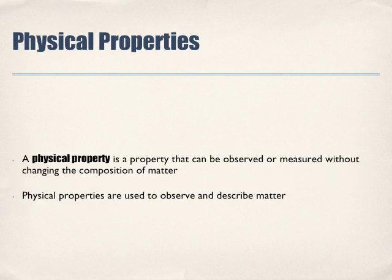A physical property is a property that can be observed or measured without changing the composition of matter. Physical properties are used to observe and to describe matter — these are things, characteristics, which we can see or even measure.